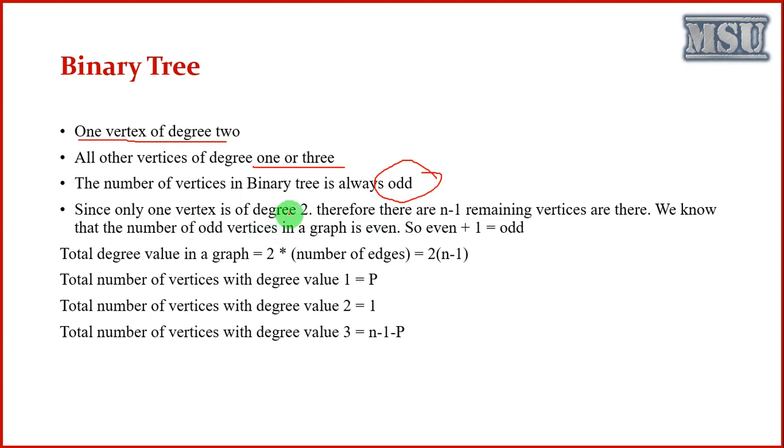Why is it an odd number? One vertex is of degree 2. So a graph contains n vertices. Therefore, remaining n minus 1 vertices are there. We know that odd vertices in a graph is always even. So even plus 1, it should be an odd number. So number of vertices in a binary tree is always an odd number.